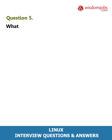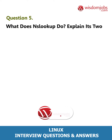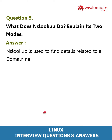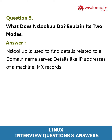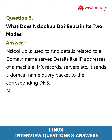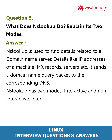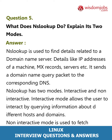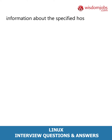Question 5: What does nslookup do? Explain its two modes. Answer: nslookup is used to find details related to a domain name server — details like IP addresses of a machine, MX records, servers, etc. It sends a domain name query packet to the corresponding DNS. nslookup has two modes: interactive and non-interactive. Interactive mode allows the user to query information about different hosts and domains. Non-interactive mode is used to fetch information about a specified host or domain.